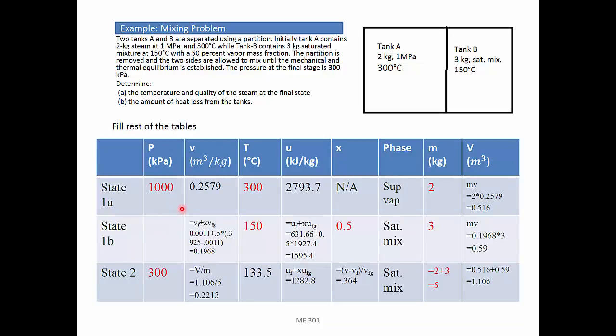Once we found all of the properties for state 1A and 1B, mass is the sum of tank A plus tank B. Volume is also the sum of tank A and tank B. From mass and volume, I can find specific volume for state 2.